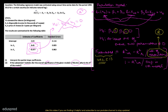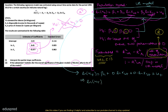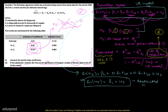Let's figure out the unrestricted and restricted models. The model given to us is the unrestricted model. If we impose the two restrictions — beta 2 equals 0 and beta 3 equals 0 — on the unrestricted model, we get: log of Yt equals beta 1 plus Ut. This is the restricted model.